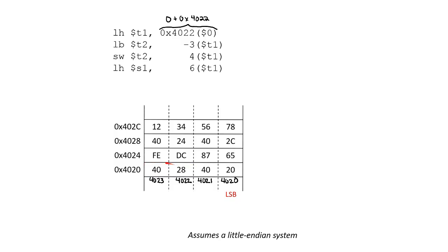When we load that into the register, the register value for T1 is going to be assigned a sign-extended version of those bytes. Since the most significant bit is a 0, we will get four zeros in front of that value, giving us 0x00004028. After that first instruction, T1 will have the value shown.